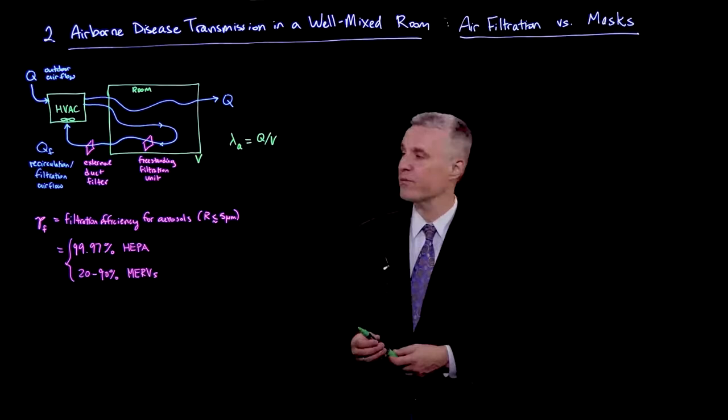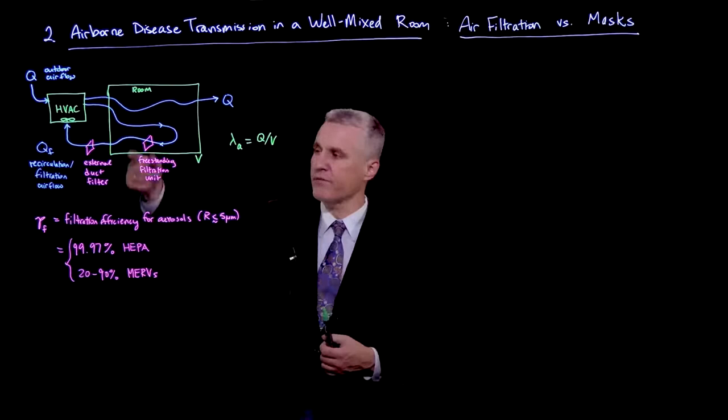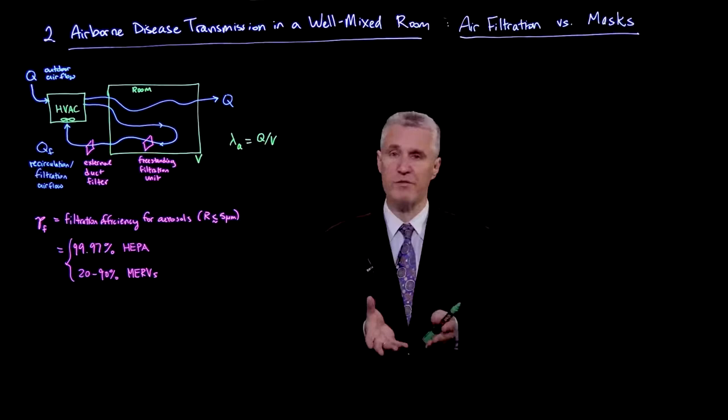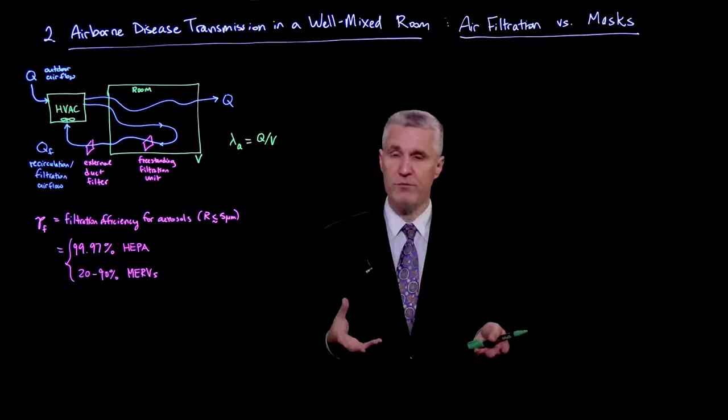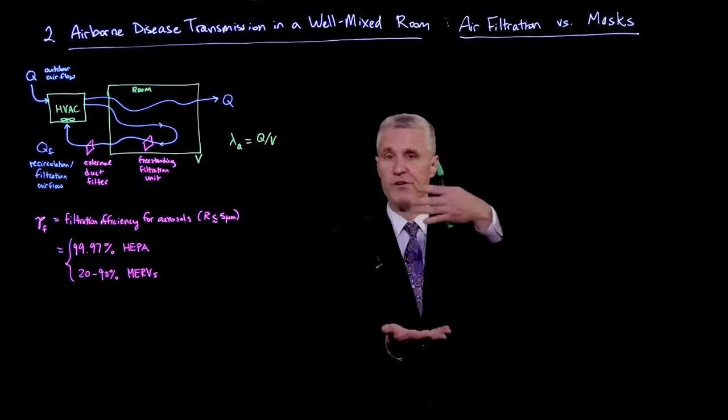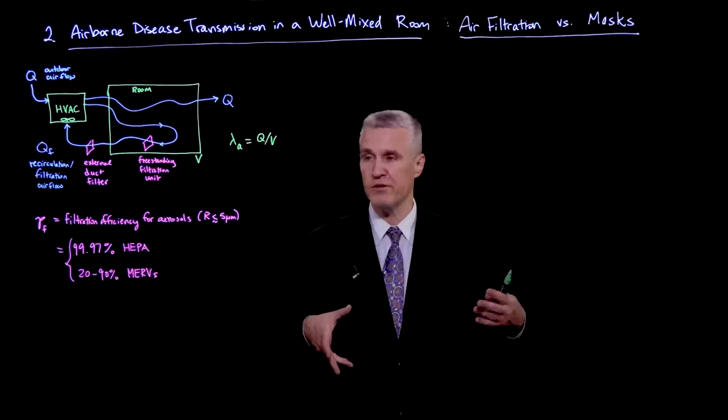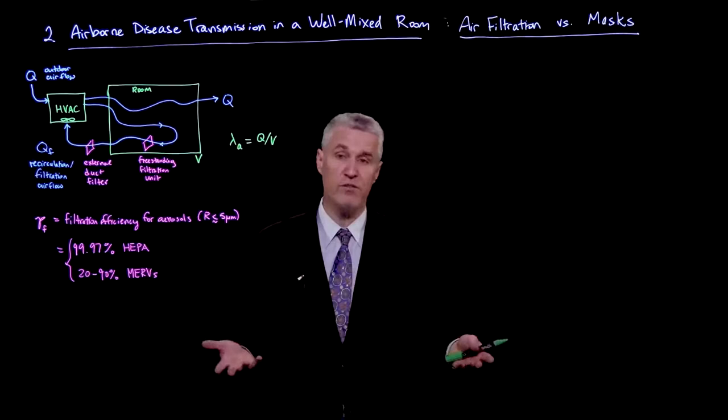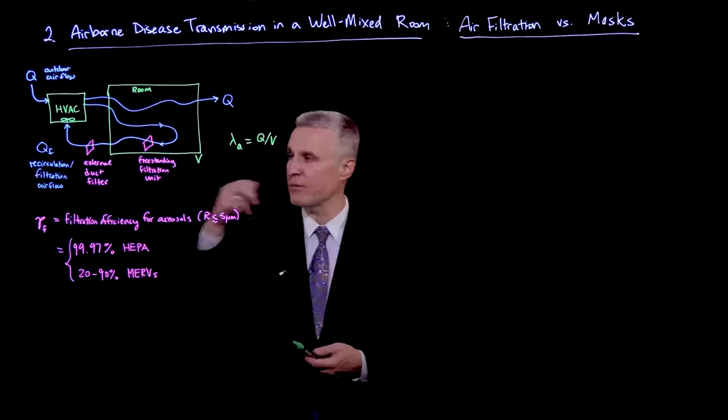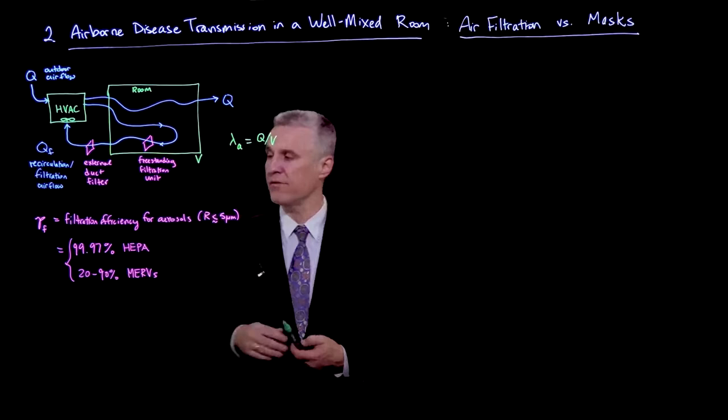It's worth emphasizing you could also have a freestanding filtration unit. There are a variety of different kinds: a fan blowing through a HEPA filter, electrostatic precipitators with high electric fields depositing droplets onto surfaces, UV concentrated light treatment to kill the virus. Since we've been keeping track of the concentration of virions, they could be deactivated that way. All of that can be lumped into this simple picture of a recirculation flow rate Q_F and filtration efficiency P_F.